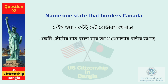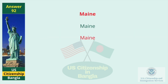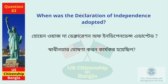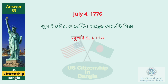Name one state that borders Canada. Maine. When was the Declaration of Independence adopted? July 4, 1776.